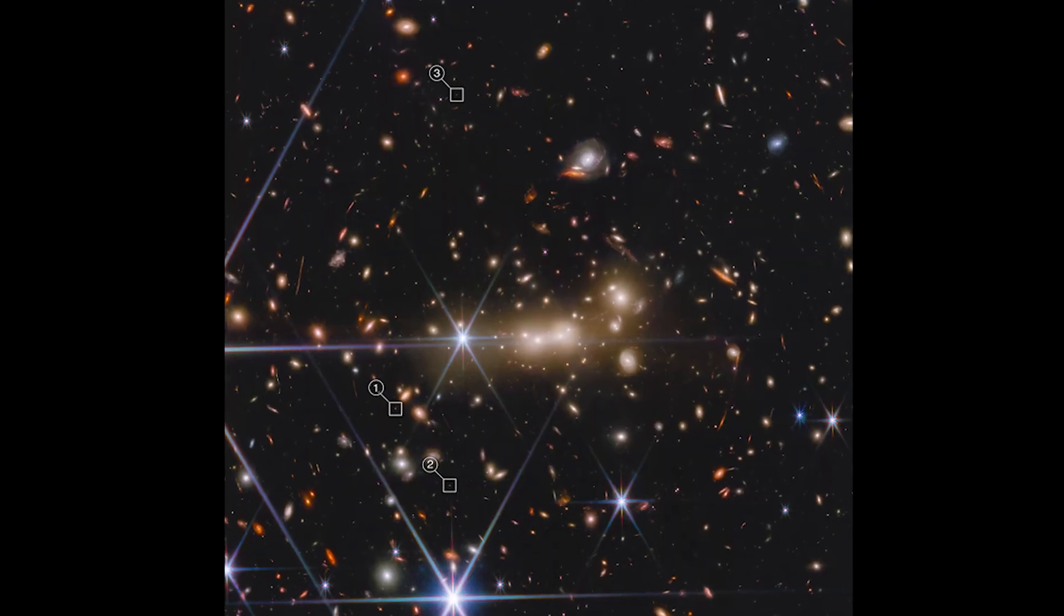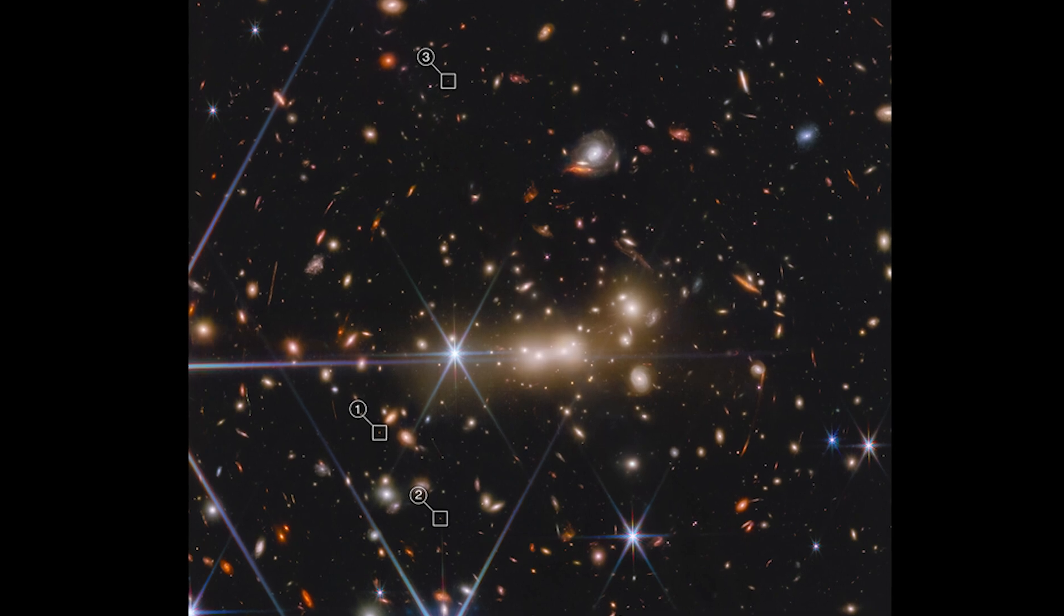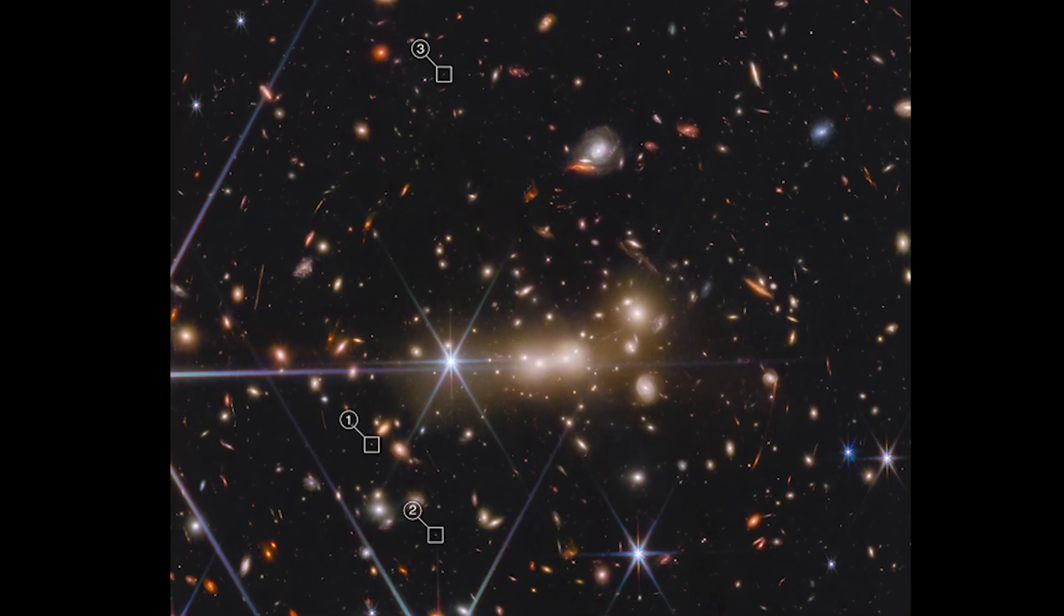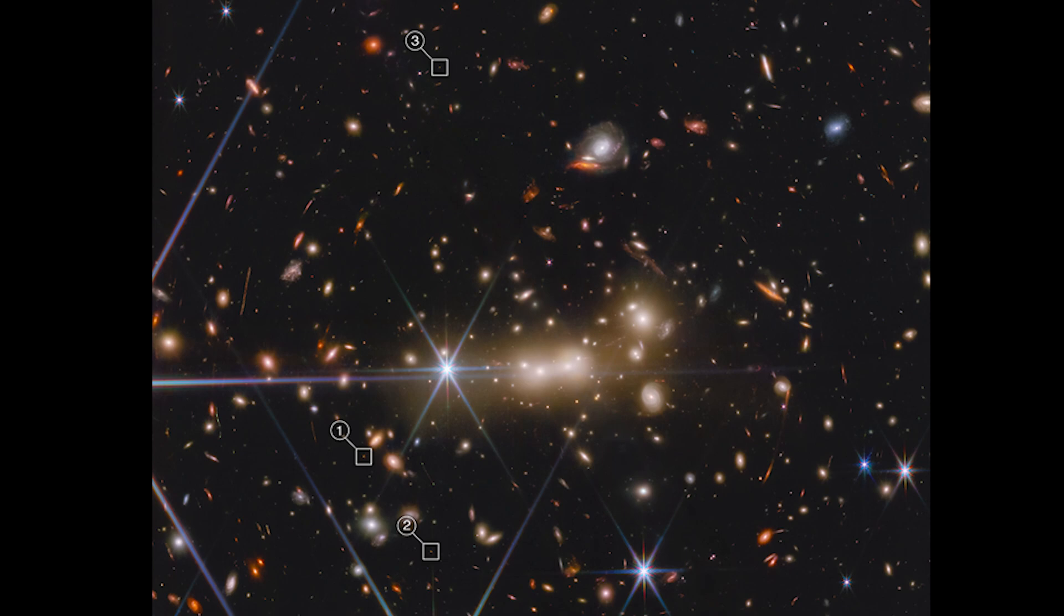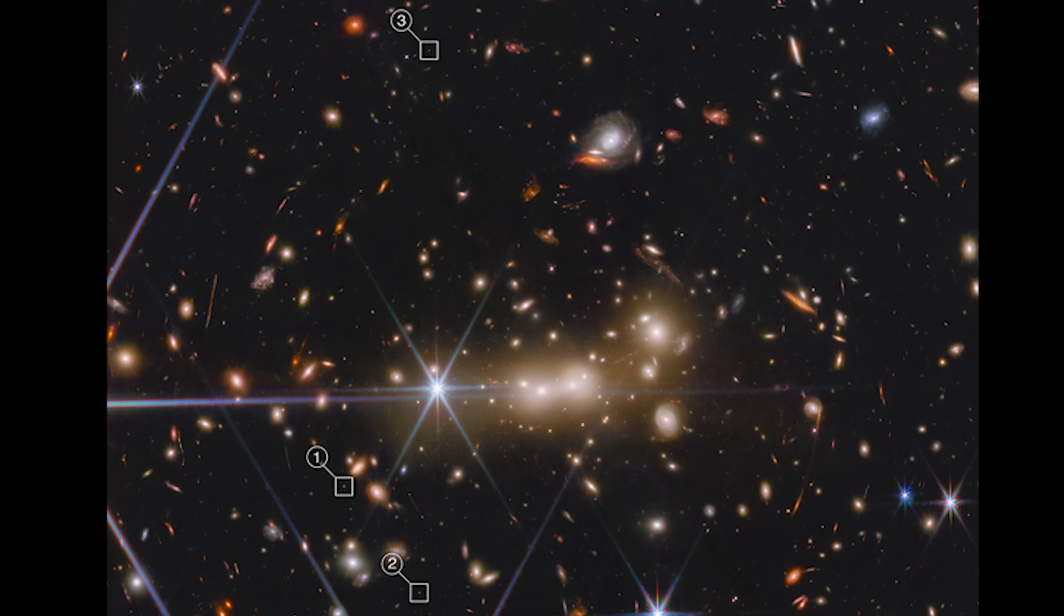The massive gravity of the galaxy cluster Max 0647 acts as a cosmic lens to magnify and bend light from the faraway J-D system. It also caused it to triply lens the J-D system, making the galaxy appear in three separate locations.